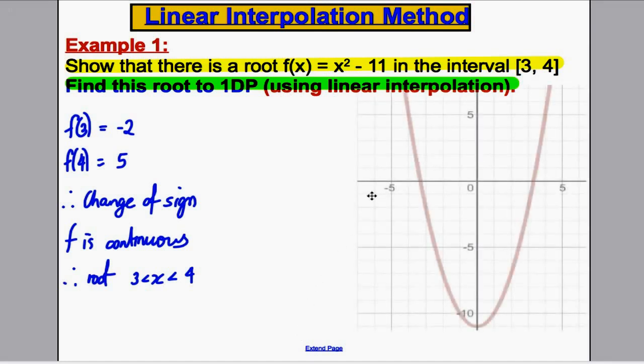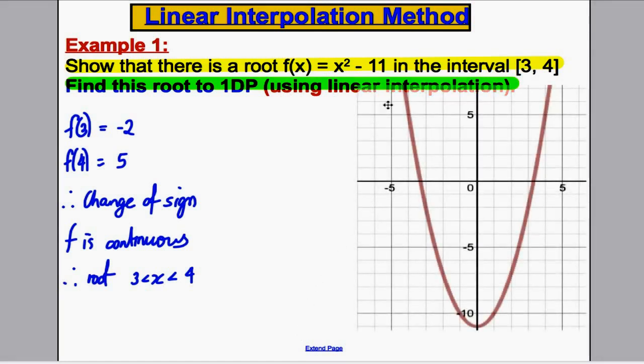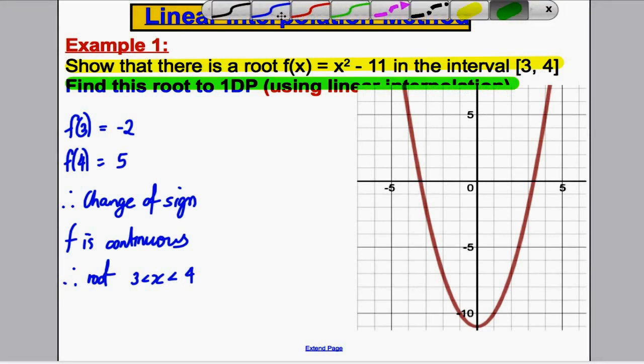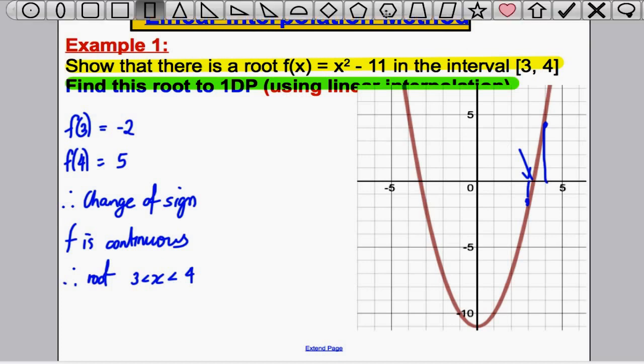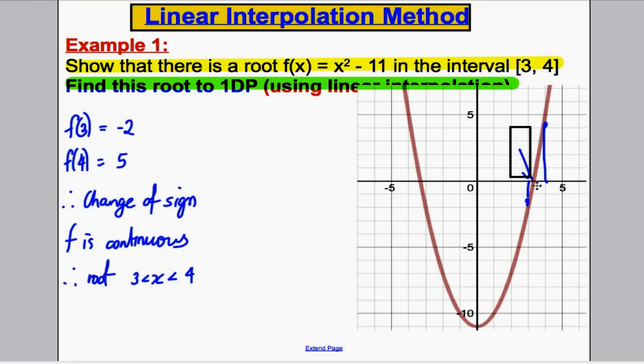Let's just quickly graph the function as we did previously. We know now there is a root between 3 and 4. So 3 is here, and 4 is here. We know there is a root somewhere between x = 3 and x = 4. As we did previously, I'm just going to focus on this section here, zoom right in, and draw a picture to represent that.